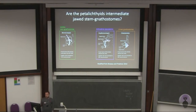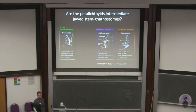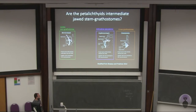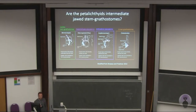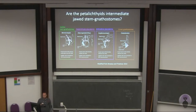Placoderms are in between, because they are the only stem gnathostomes with jaws. The arthrodire group — the major group of placoderms, like Dunkleosteus, big scary placoderms — have a similar morphology, with a facial nerve that divides behind the orbit and a jugular vein not invested in the neurocranium. But other placoderms, like the petalictids, have a kind of intermediate morphology. In macropetalictid, the facial nerves divide inside the orbital wall and the jugular vein is invested in the neurocranium — so here we have a jawed stem gnathostome that has some jawless features, a morphological intermediate between jawless and jawed stem gnathostomes.